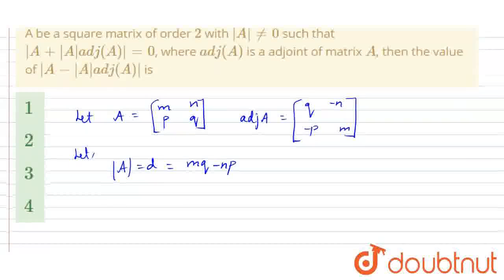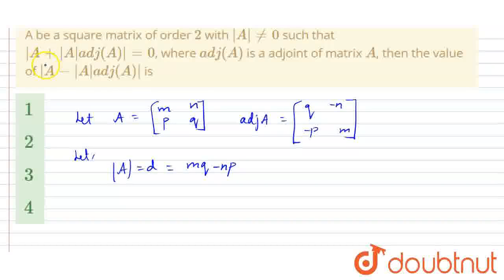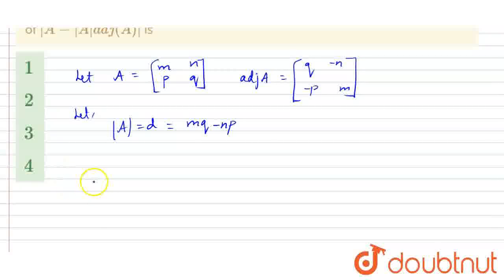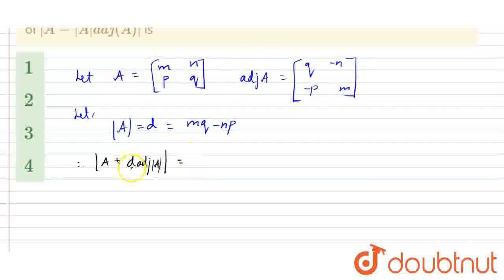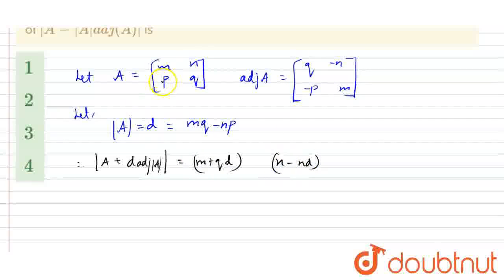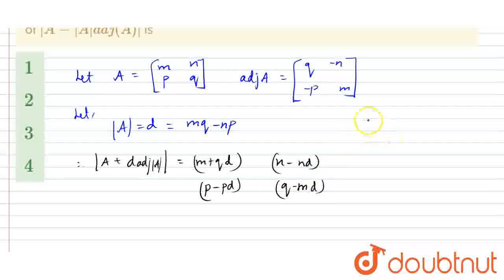Okay students, so MQ minus NP, I'm going to take here. In our question, we have to prove that this value is equal to 0. Therefore, I'm going to take mod A plus D into adjoint A, the determinant of which equals the matrix with entries (M + QD), (N - ND), (P - PD), (Q - MD). This is our matrix.